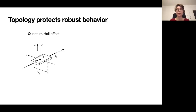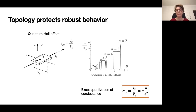In the quantum Hall effect, we consider a two-dimensional metallic sheet through which we apply a perpendicular magnetic field. If one drives a current in one direction through this material, the magnetic field alters the movement of electrons such that a voltage accumulates in the perpendicular direction. The ratio between this driven current and the accumulated voltage is given by the Hall conductivity.